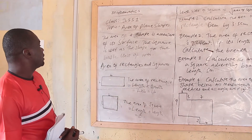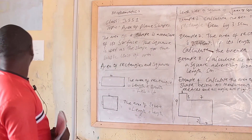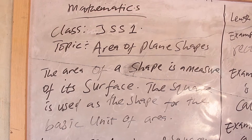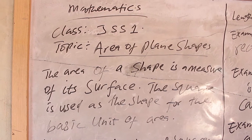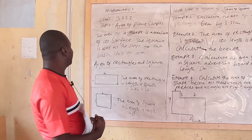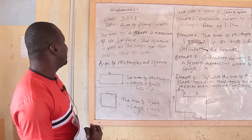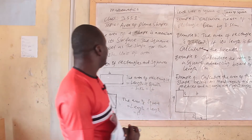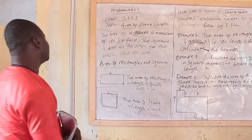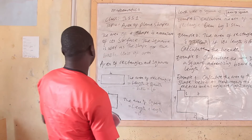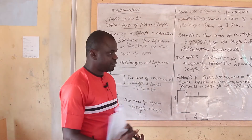Now, what is the area of a shape? The area of a shape is the measure of its surface. And when we find the area of a shape, we use the square. The square is used as a shape for the basic units of area.